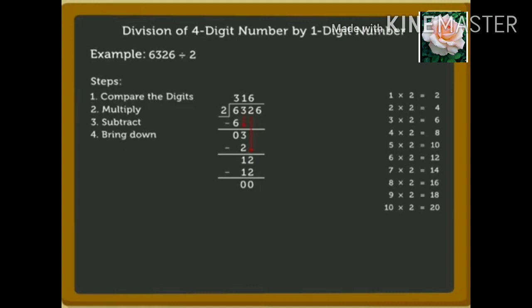Now, bring down the next digit, that is 6, and write it beside 0. Here, 6 is greater than 2 and therefore we can divide 6 by 2. As we know, 3 times 2 is equal to 6. So, we write 3 above the 6 in the quotient and the number 6 in the ones column under 6. Subtract 6 from 6. The remainder is 0, written in the ones column. Our division is complete.